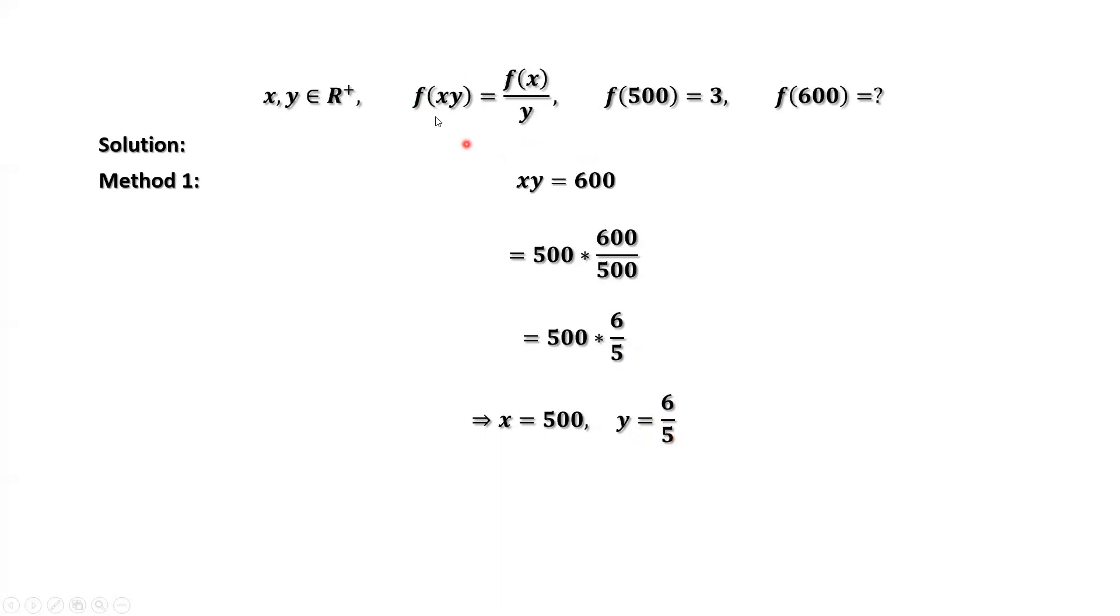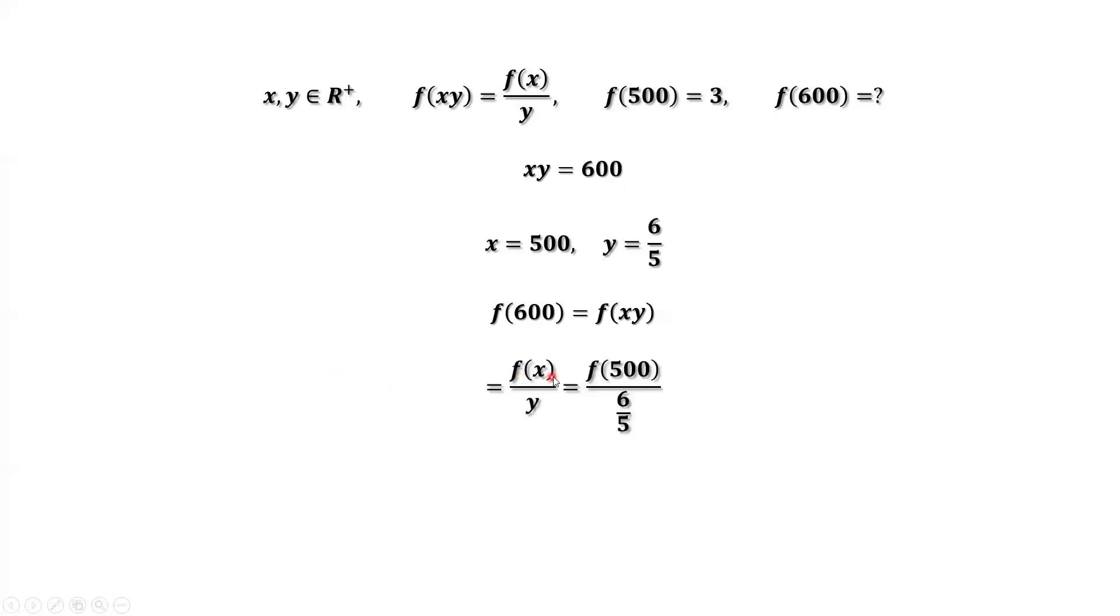Go back to this given condition. F of 600 equals f of xy. xy equals 600. F of x equals f of 500. y equals 6 over 5. F of 500 is given by 3. Replace f of 500 by 3. We have 3 over 6 over 5, which is 5 over 2. This is the answer.